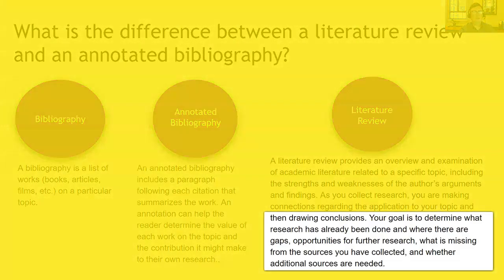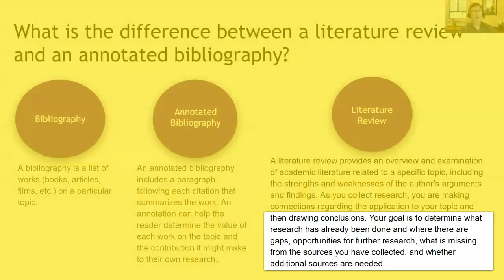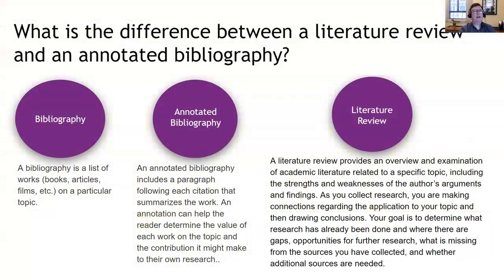This is really important: your goal is to determine what research has already been done, and then where there are gaps. For example, if two authors are talking about poverty in the United States — one addressing homelessness, the other addressing lack of vocational training — you may notice there's no literature combining the two. That's your gap. You're looking for what exists and what is not being presented. Opportunities for further research are what you can expand on. What is missing from the sources you have collected? That's the gap.